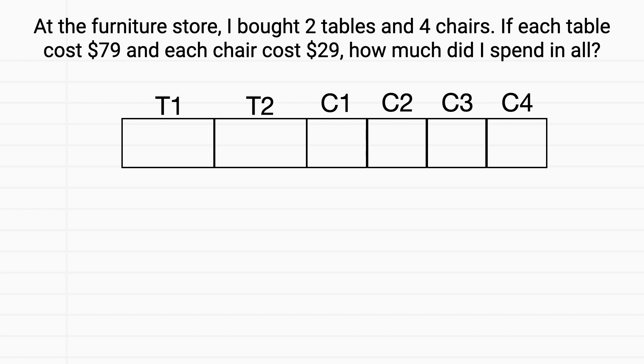Now I'll think about my two tables. In the problem, I read that each table costs $79. And so I'll write the number 79 into each of my boxes representing tables. Then I can look at my chairs.